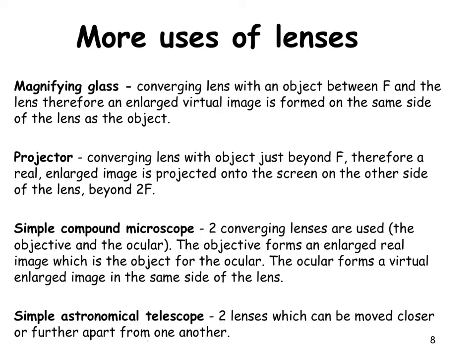Other uses of lenses: a magnifying glass uses a converging lens with the object placed between f and the lens, giving an enlarged virtual image. A projector also uses a converging lens, but the object is just beyond f, producing an enlarged real image that can be projected onto a screen.